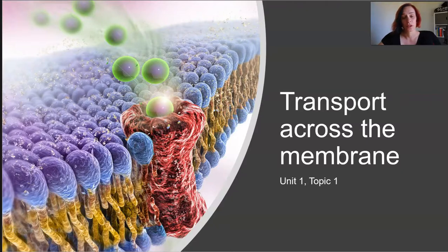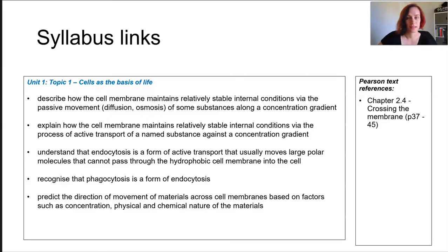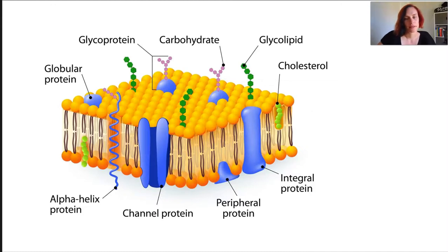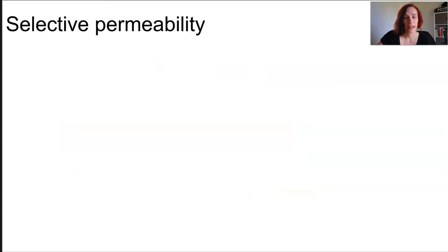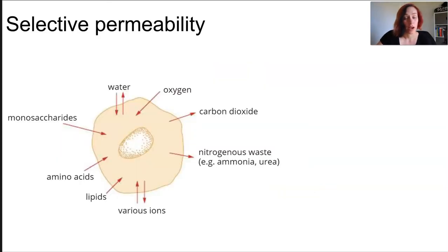In this lesson we're looking at transport across the membrane. We've already covered the description of what a cell membrane looks like, so we can use this knowledge to learn how this membrane is selectively permeable — allowing different substances to come and go when required. That permeability is required for a cell to function and perform all the basic requirements for life, getting nutrients in and removing waste.